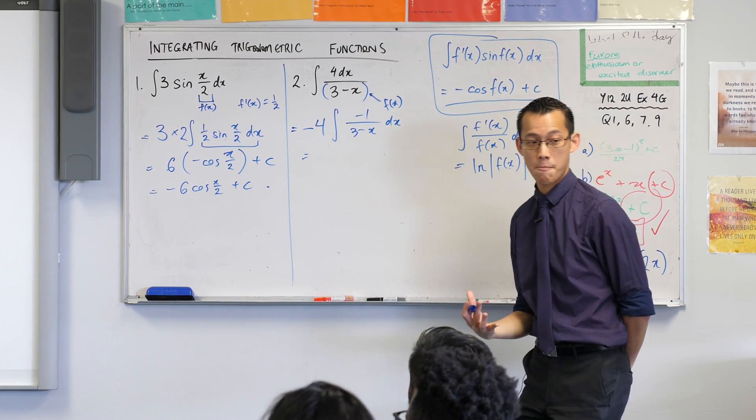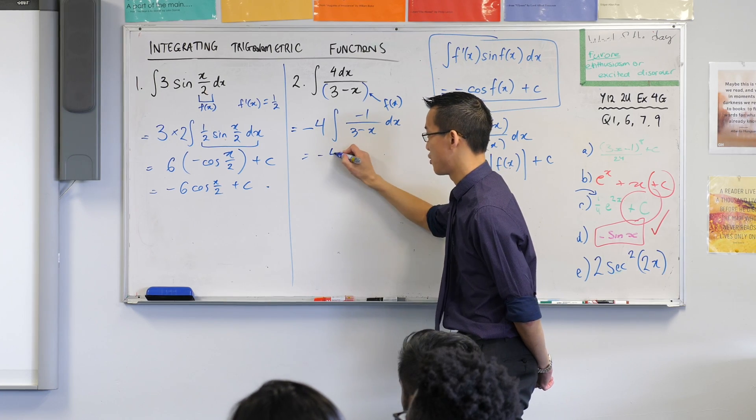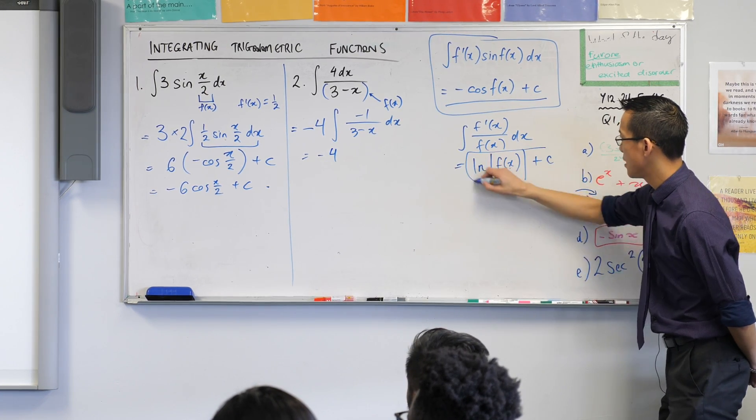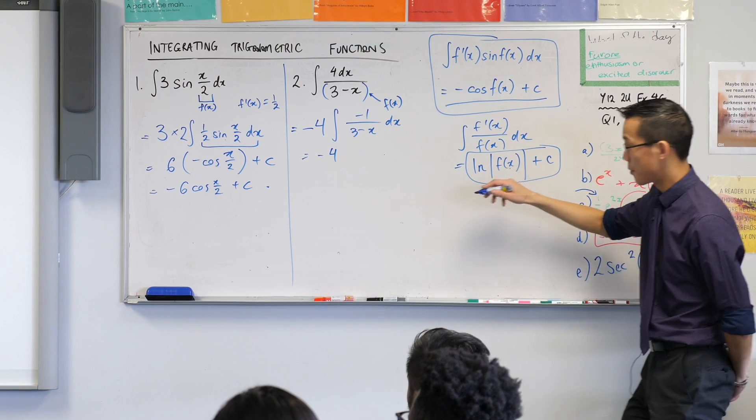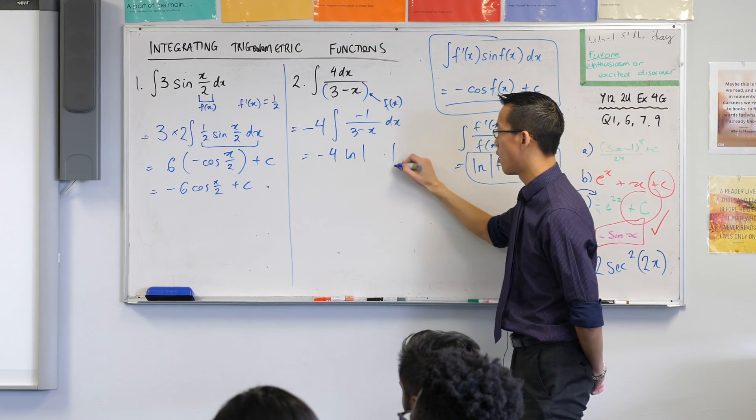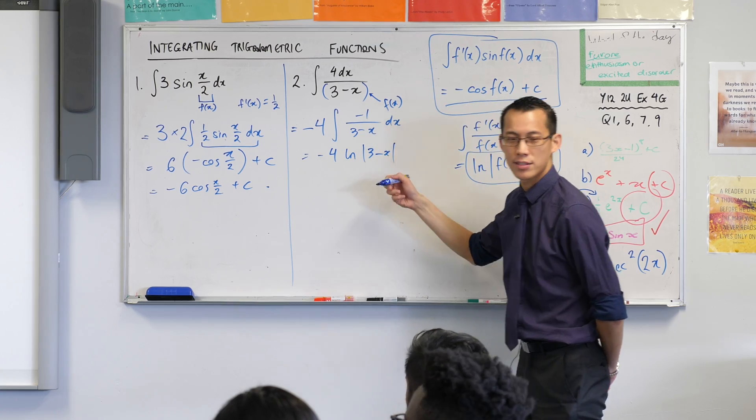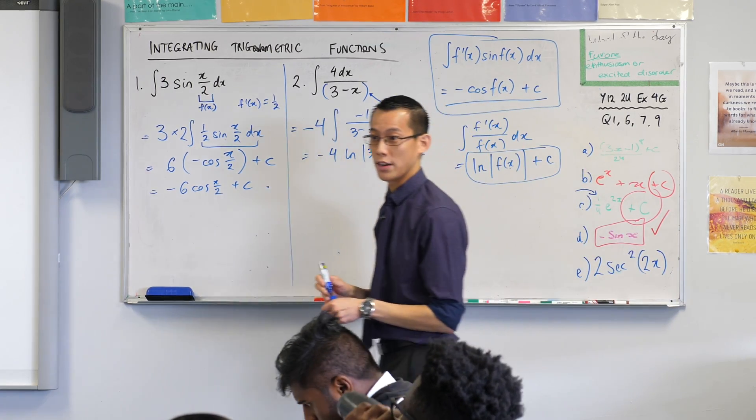What does that negative four do? Nothing much, it just hangs out the front. Yeah, just times it by that. And then now I'm into this form. I'm going to say three minus x. Yeah, three minus x is the f of x in this case, plus my constant and you're finished. Max?